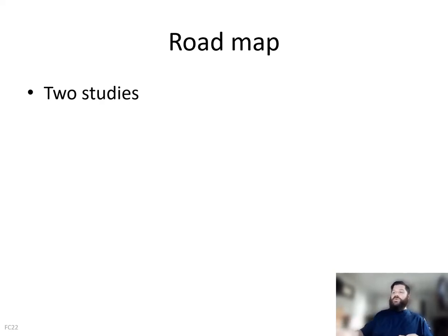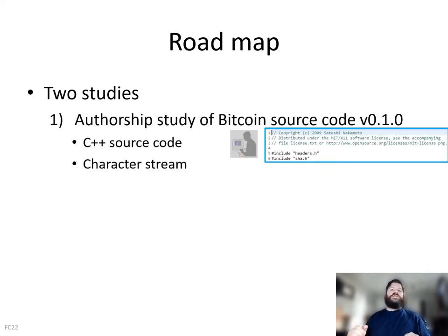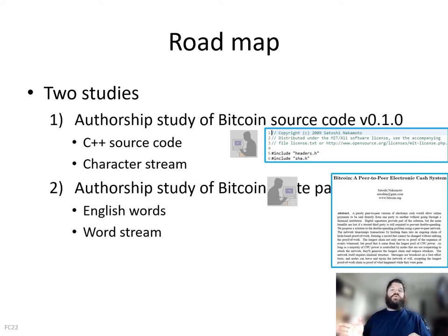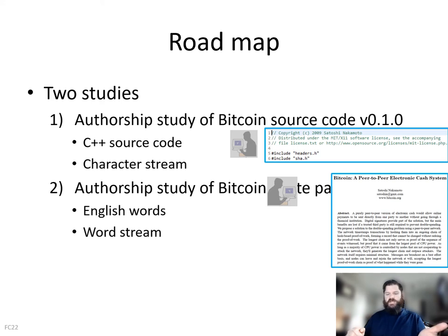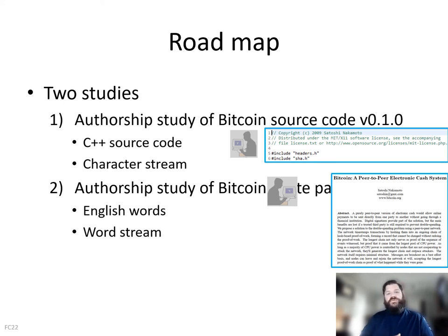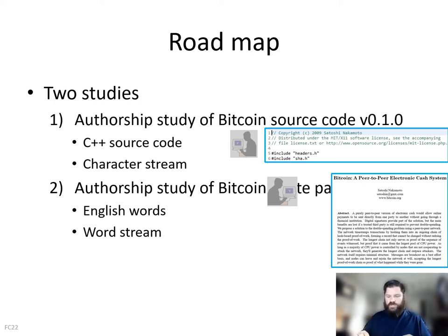We have done two studies: one on the authorship of the Bitcoin source code and another on the authorship of the Bitcoin white paper. For the source code we did a character stream, and for the white paper authorship we did a word stream, because it is written in English and words have individual meanings. For the source code, the character stream made more sense.